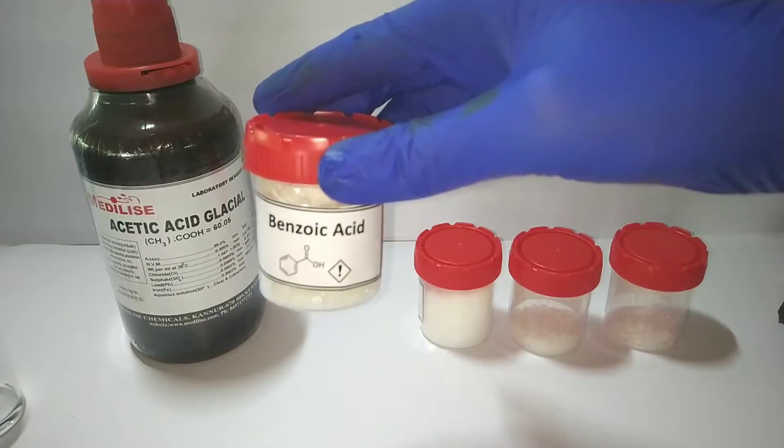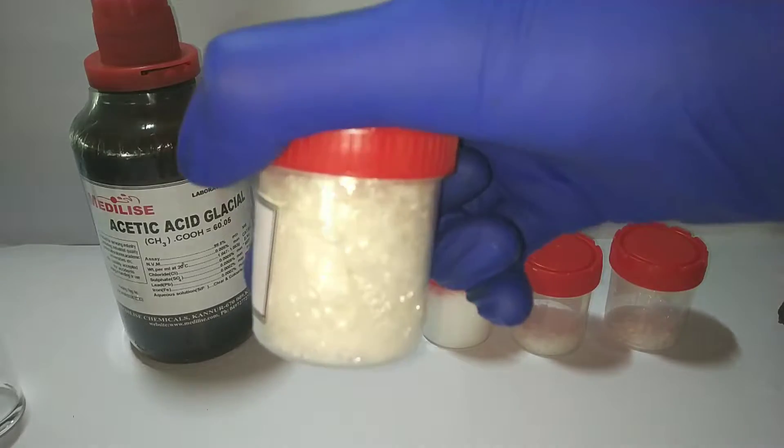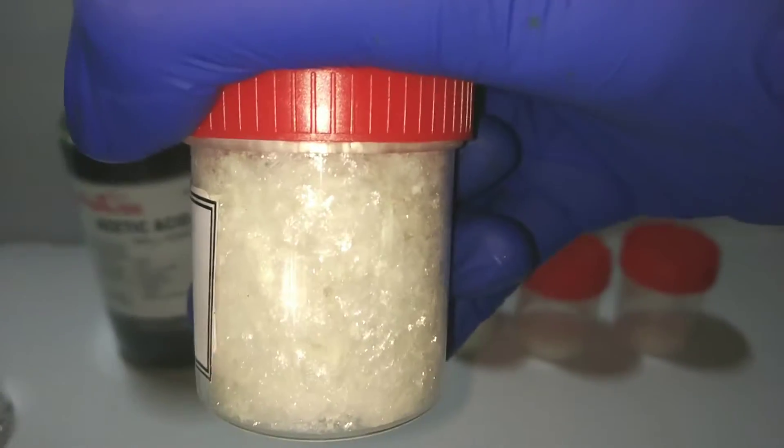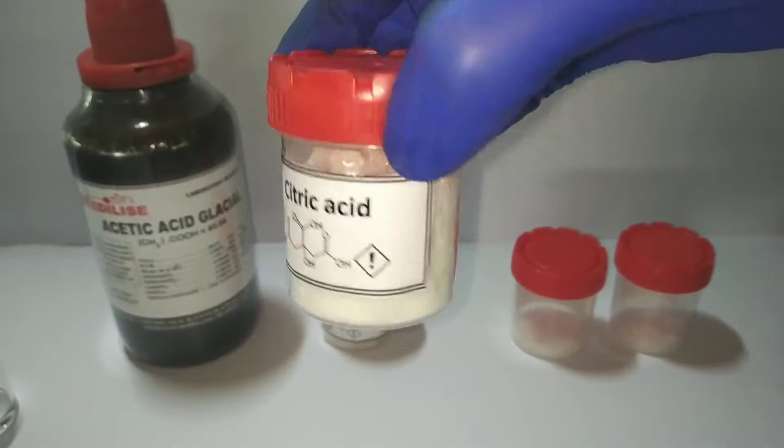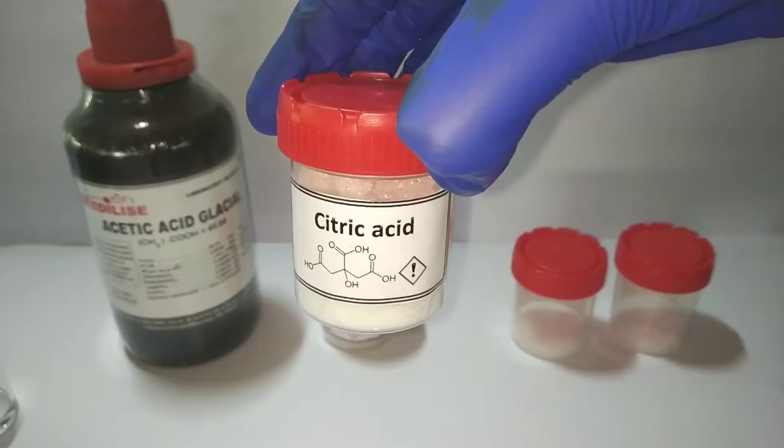For aromatic carboxylic acids, the simplest is benzoic acid. I have a synthesis video of benzoic acid—you can check the description for the link. This is citric acid, commonly available in grocery stores.